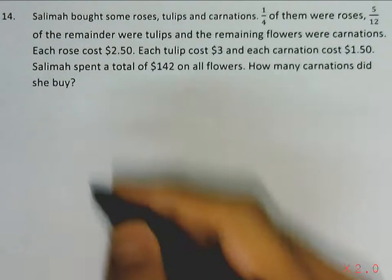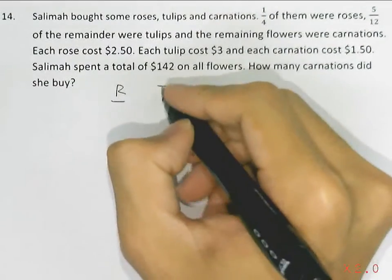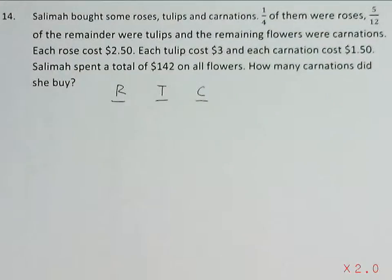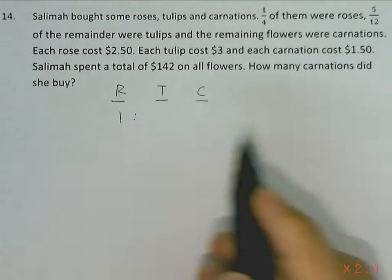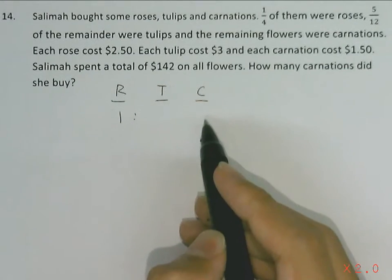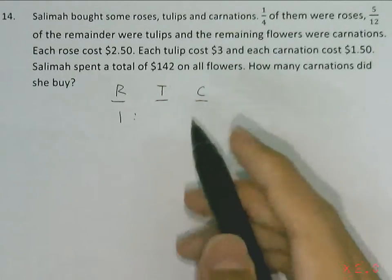Salimah bought some roses, tulips and carnations. A quarter of them were roses. That also means that the remaining three quarters were tulips and carnations.